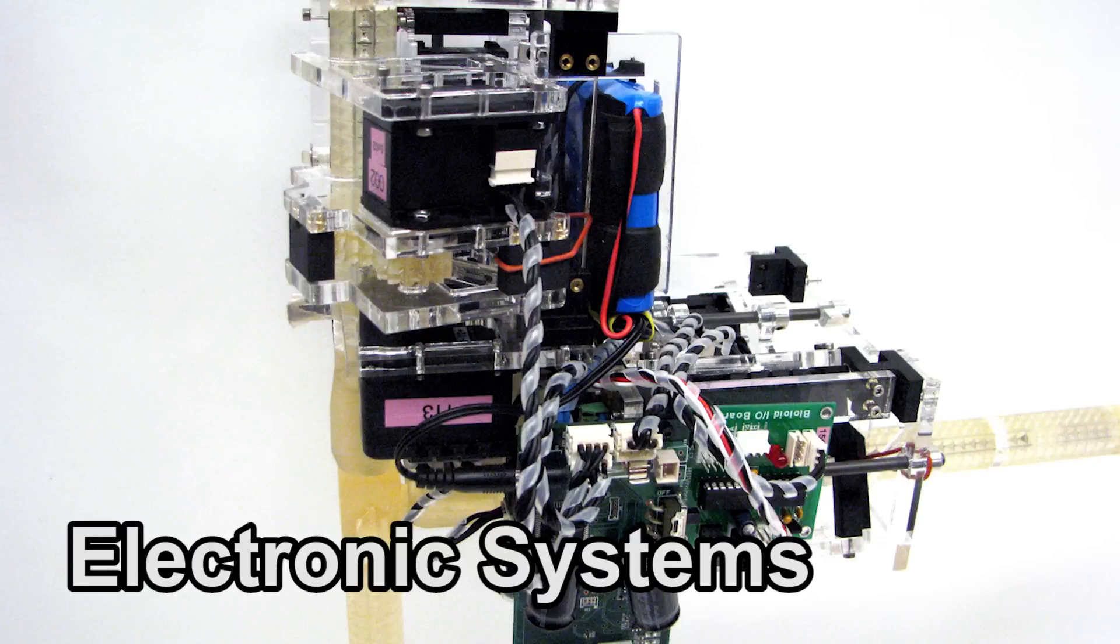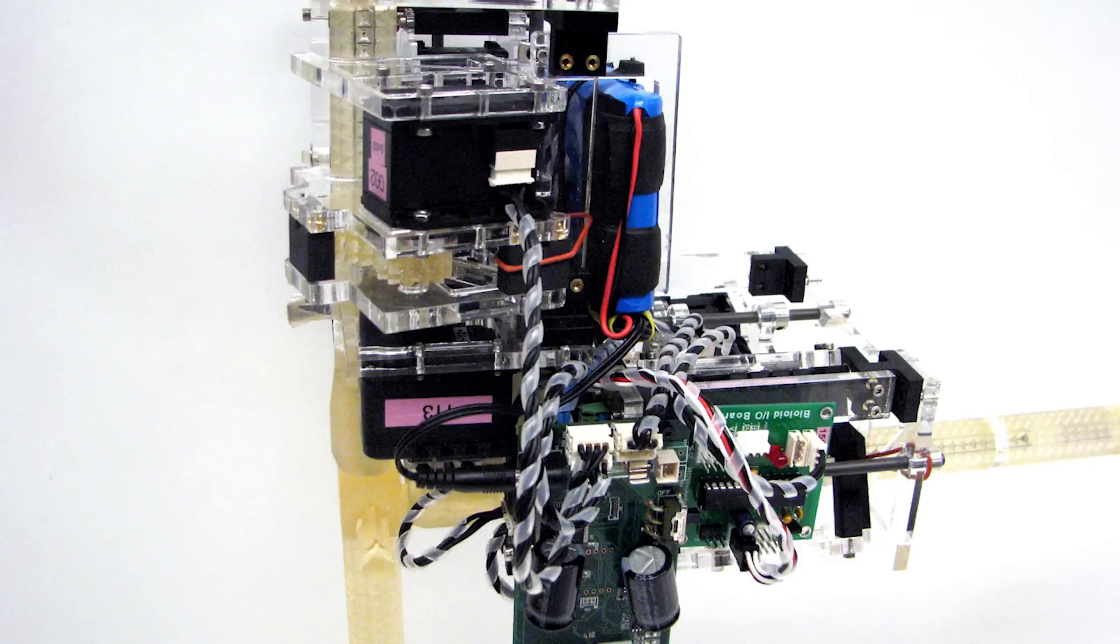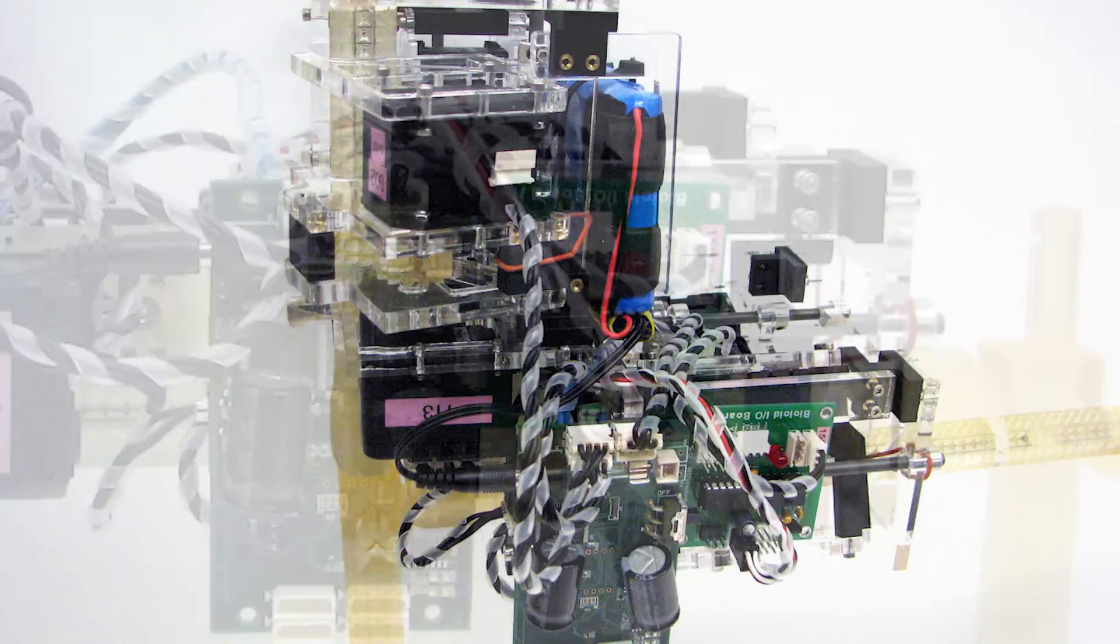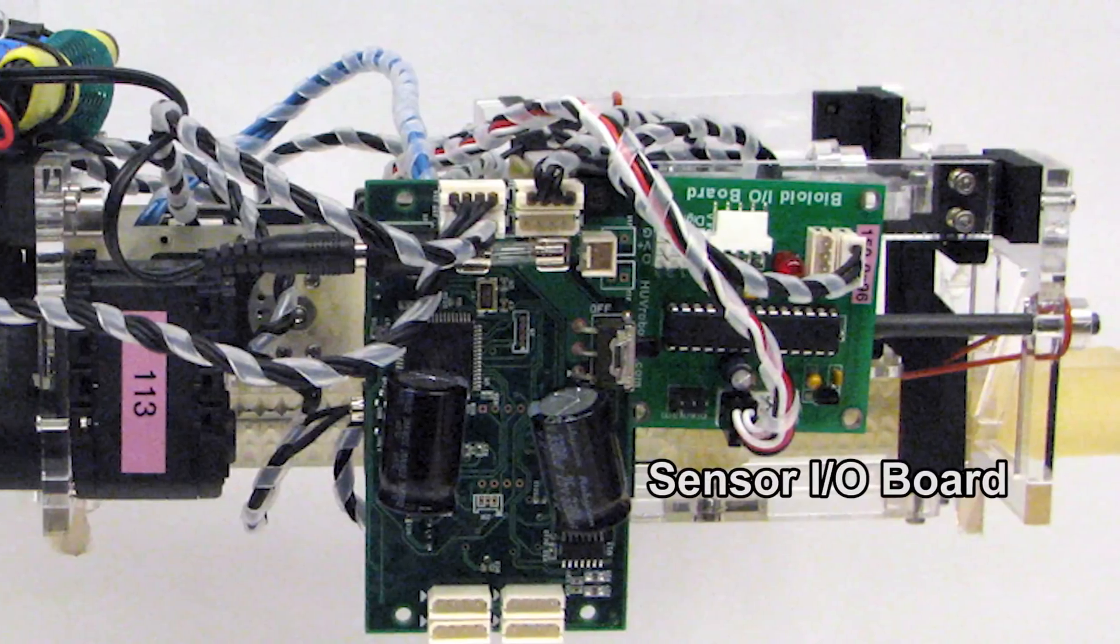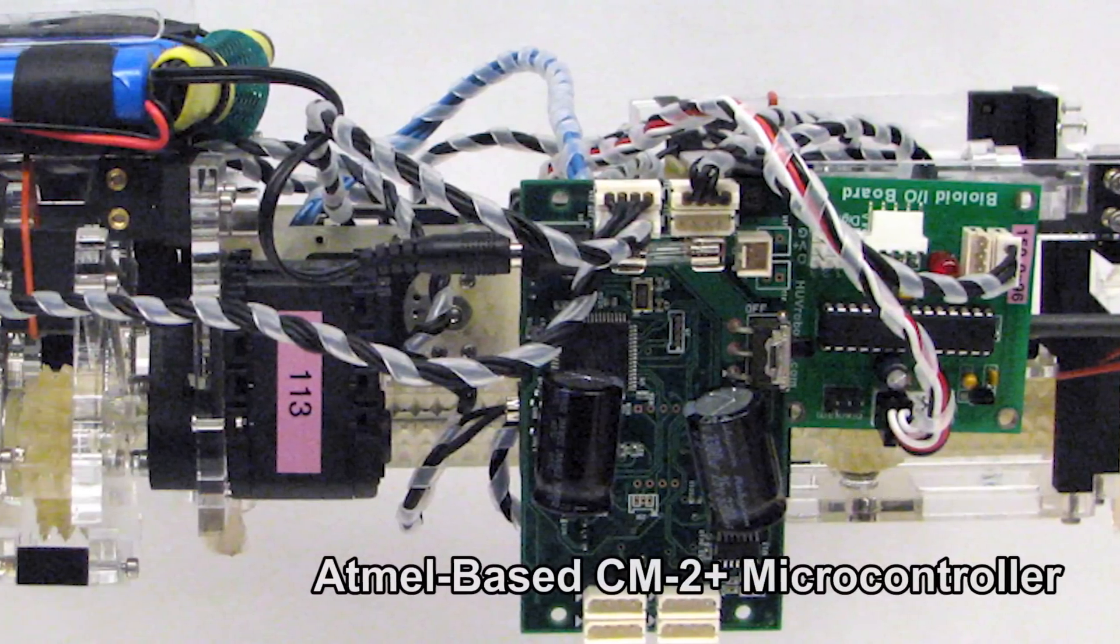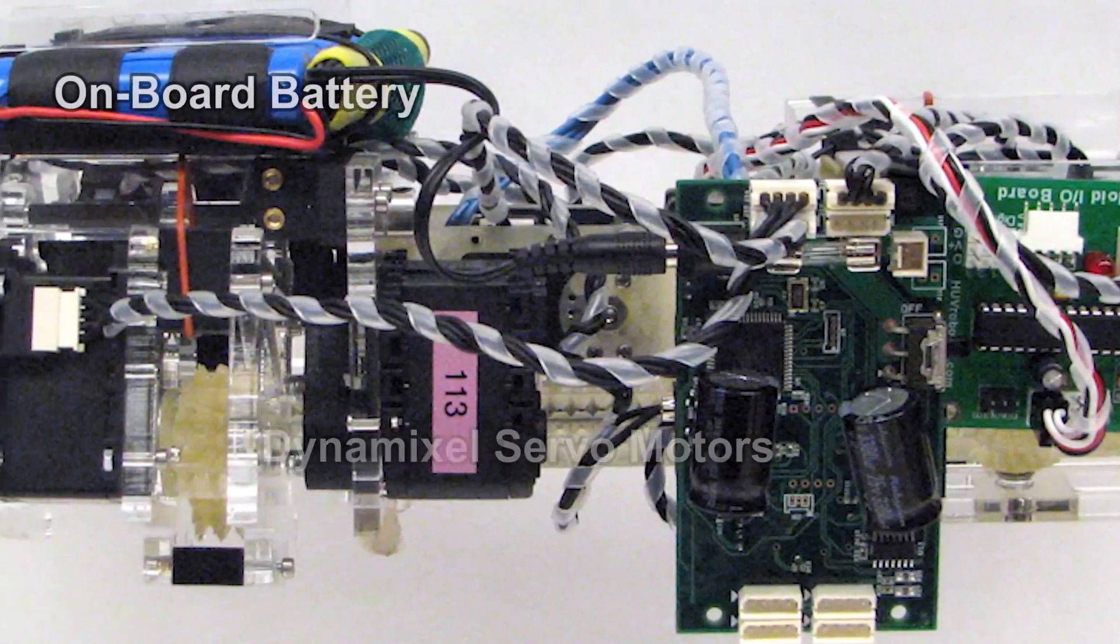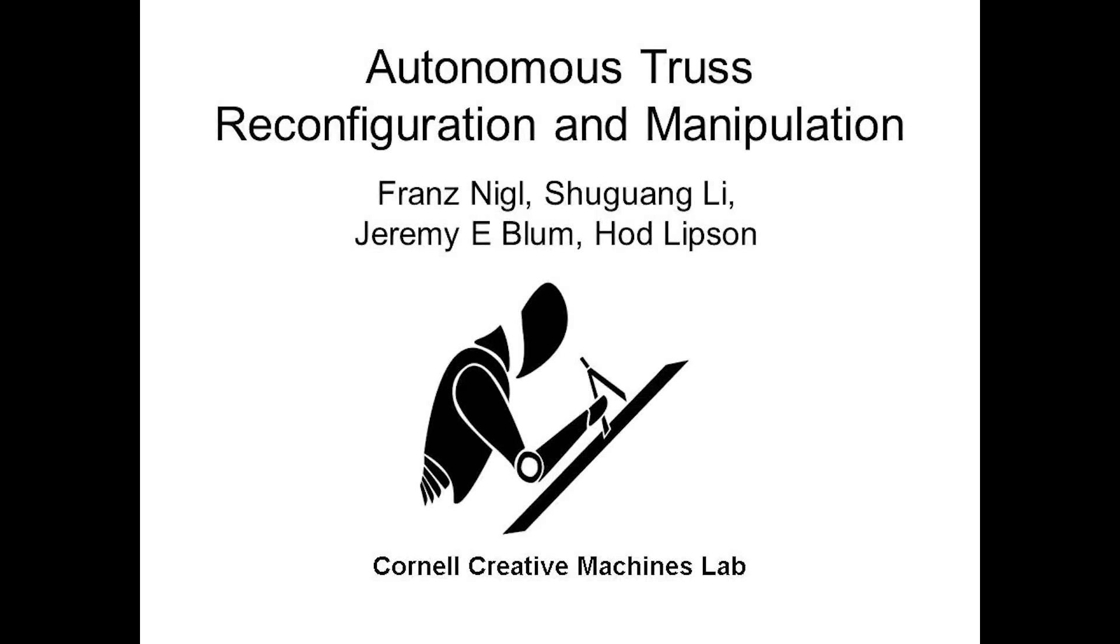The electronic systems of the robot include a reflectivity sensor that allows it to detect its location on a beam as well as the software to control it. This is handled by a sensor I/O board, a CM2 Plus microcontroller, dynamixel servo motors, and an onboard battery.